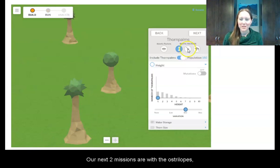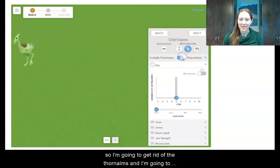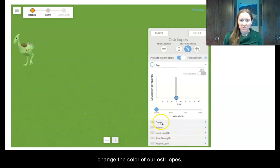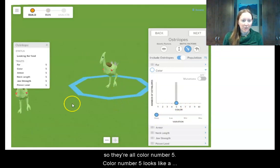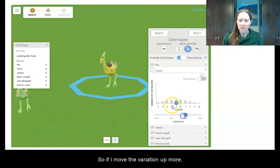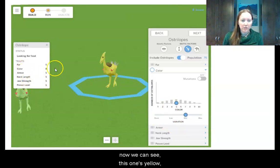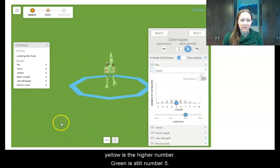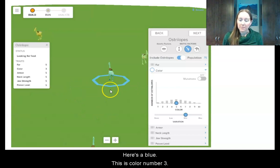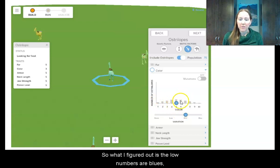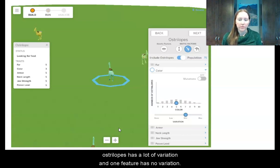Our next two missions are with the ostrilopes. So I'm going to get rid of the thorn palms and bring our ostrilopes back. So our first one is to change the color of the ostrilopes. I'm going to switch to the color and I can see right now I have no variation in the color and so they're all color number five. So I look at this and color number five looks like a green. So I want to have blue, green, and yellow. So if I move the variation up more, now I can see this one's yellow. So this is color number eight. So yellow is a higher number. Green is number five, so that's in the middle. Let me see if I can find some other colors. Here's kind of a blue. So this is color number three. So what I figured out is the low numbers are blues, the middle numbers are greens and the high numbers are yellows.